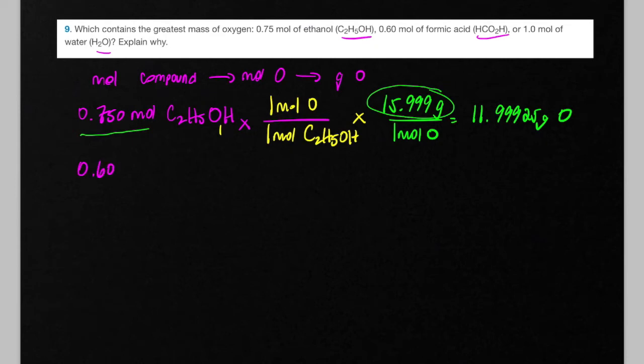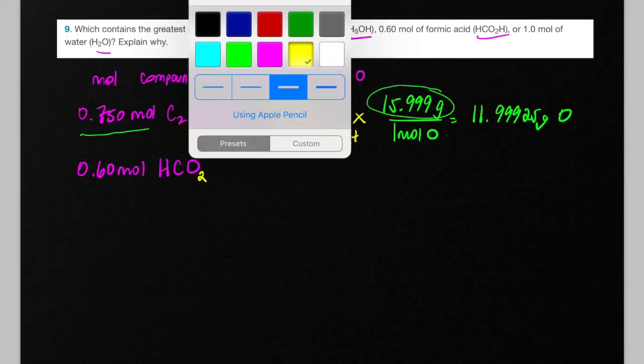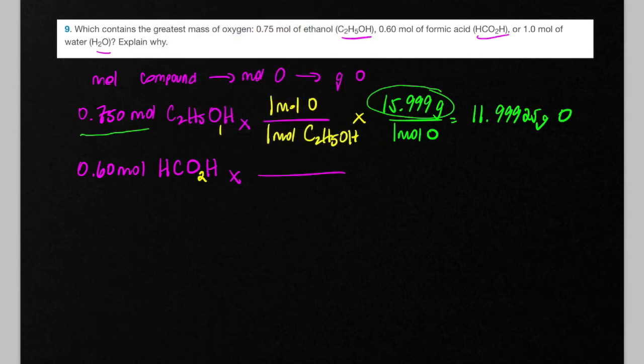Now let's look at the formic acid. We have 0.60 moles of this formic acid. And there's a little 2 there from this formula. And so if we convert to moles of oxygen, because there's a 2 there, there's actually 2 moles of oxygen per 1 mole of the formic acid.